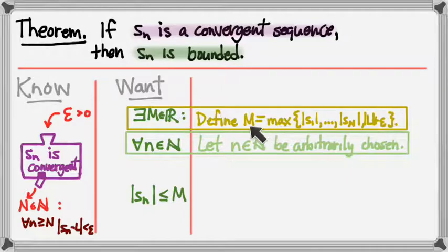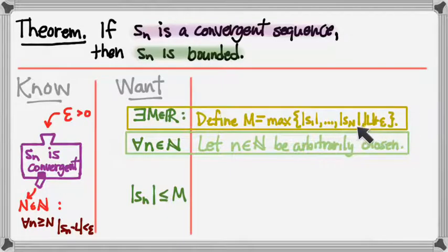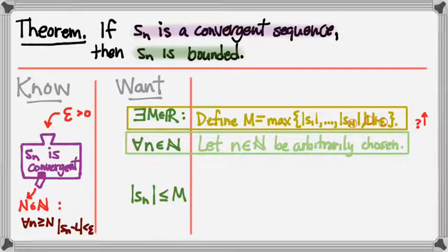We're going to define M to be the maximum of: the absolute values of the terms in the head, and |L| plus epsilon bounding our tail. But looking at this definition, we haven't told the reader everything they need to know — we haven't told the reader what N is, what L is, or what epsilon is. So that's a clue that we're missing something in our proof prior to this definition.